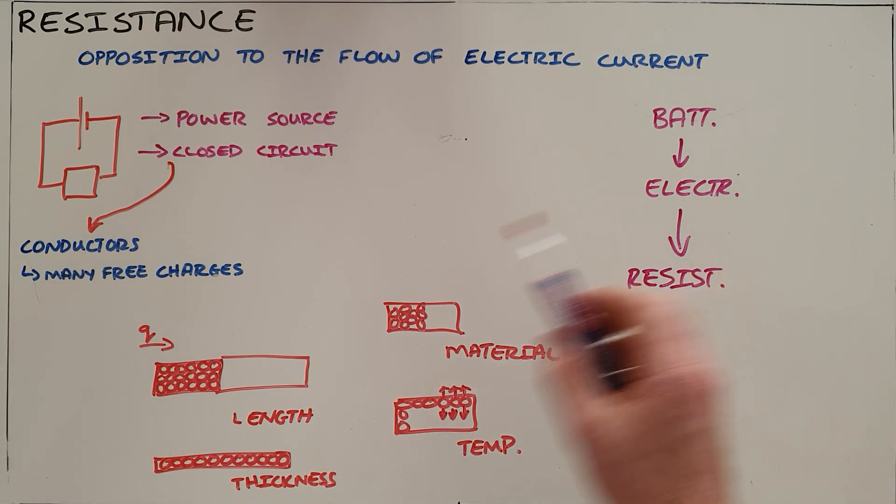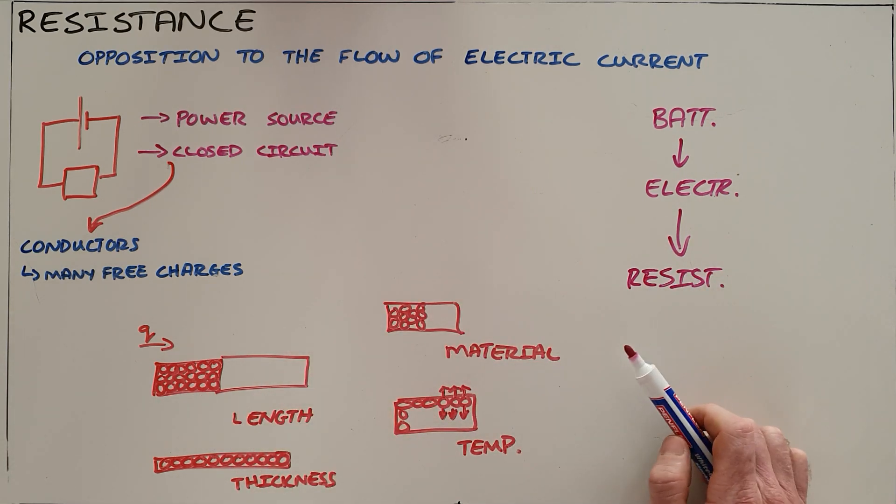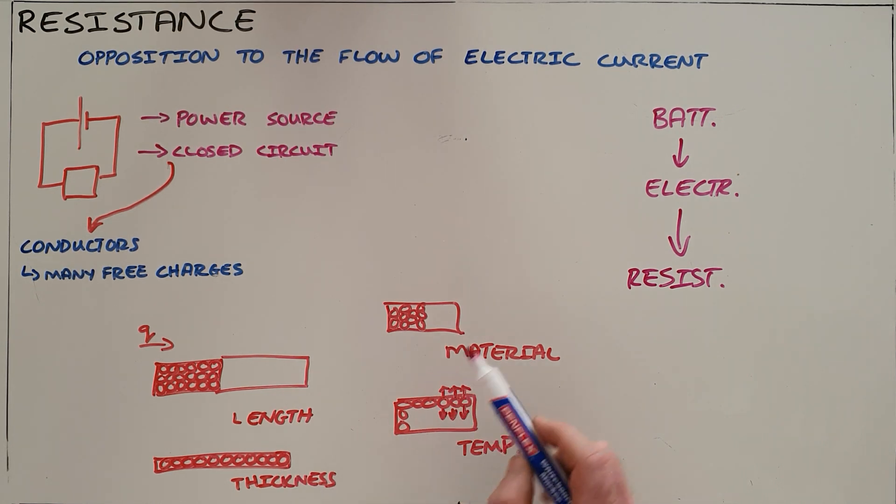There are four factors that affect the amount of resistance that a substance or material offers. First is length: the longer the substance, the more resistance. Second is thickness: the thinner the substance, the more resistance. Type of material determines how easily charge can flow through it. And temperature: the higher the temperature, the more resistance that material offers.